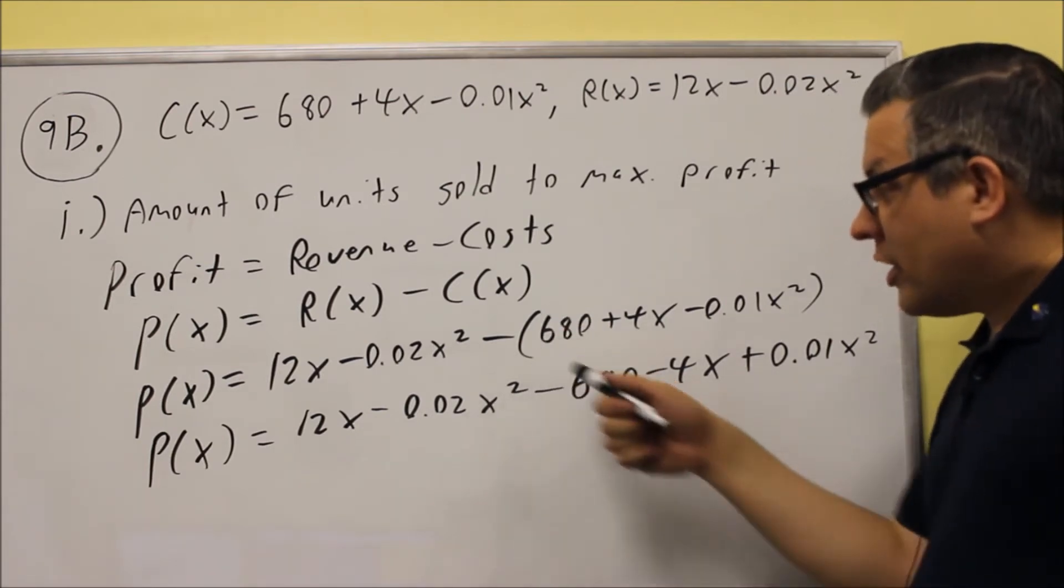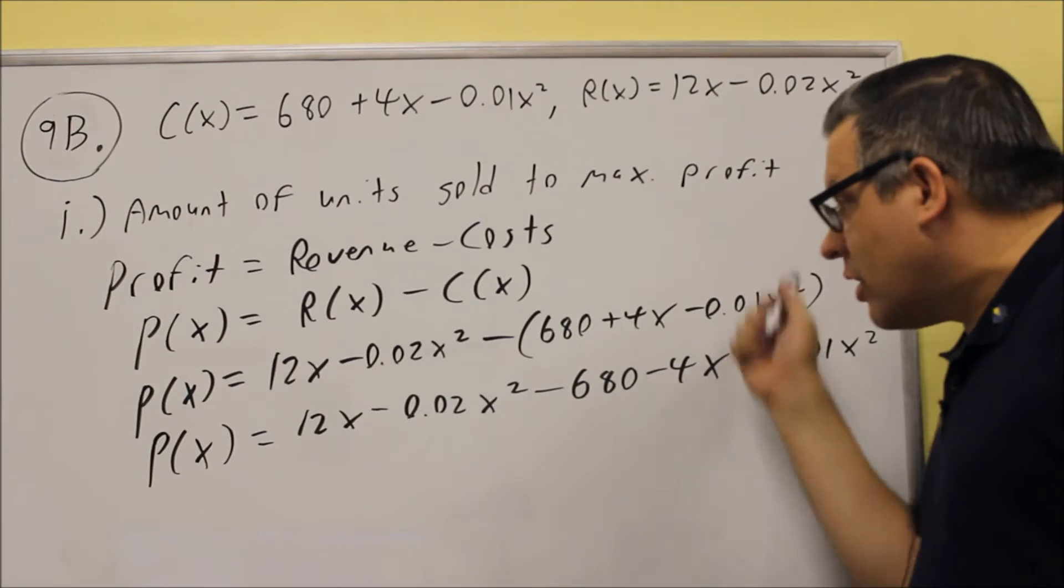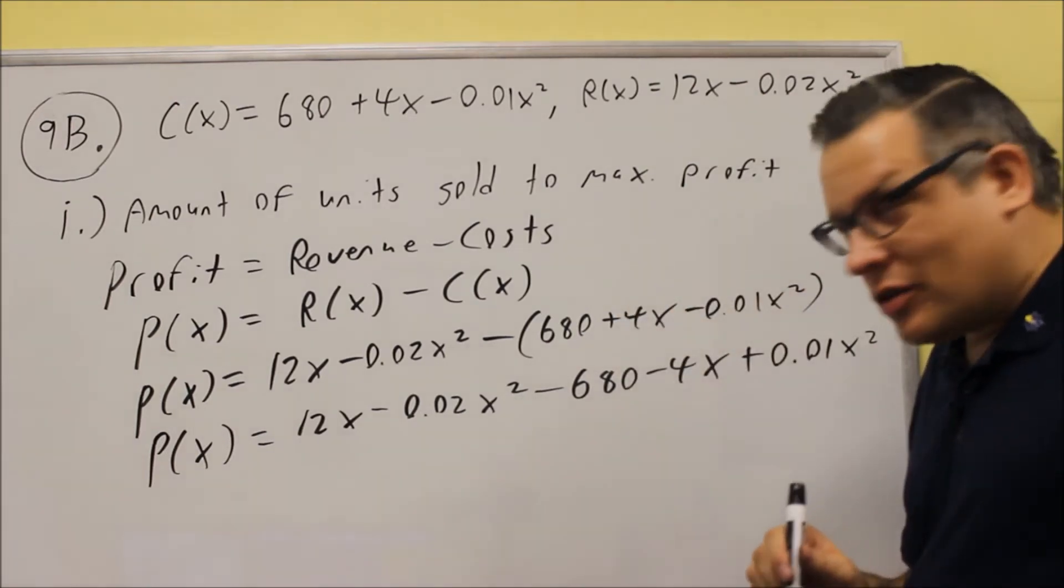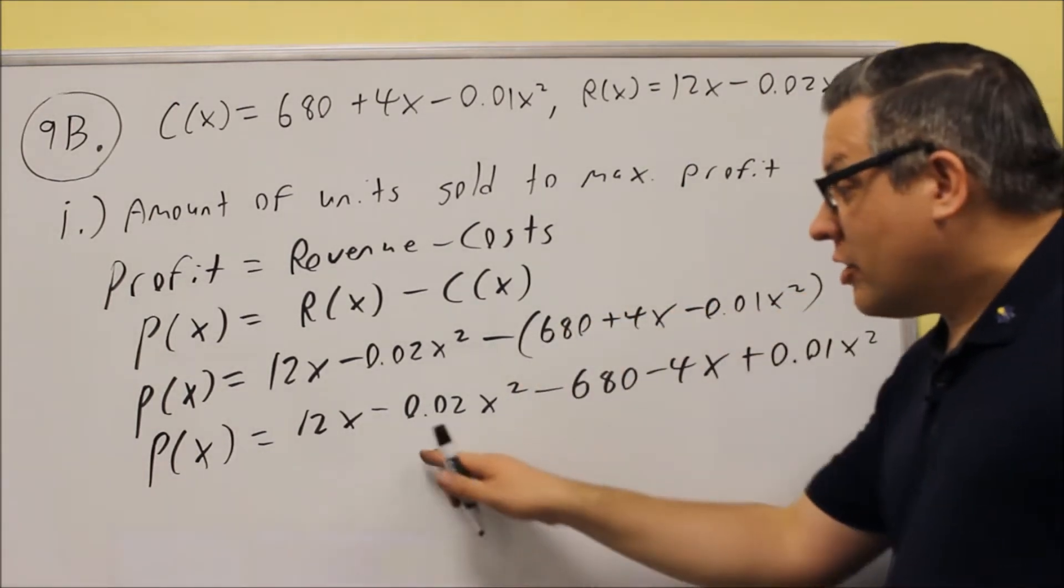So we have all this distributed. So it's really important, again, that when you subtract the cost, the whole thing needs to be in parentheses. You're subtracting everything inside there.